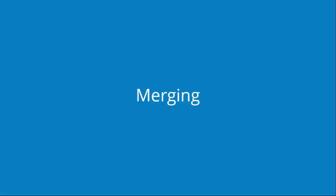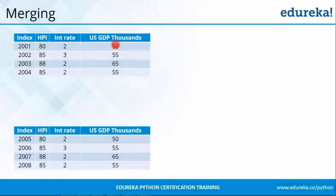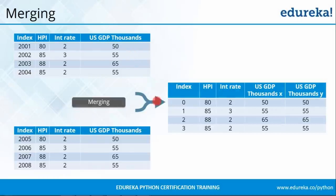After slicing, let's look at merging. We have two DataFrames: one with index values from 2001 to 2004, and another with index values from 2005 to 2008. When we merge both of these DataFrames, they form a single DataFrame. We can specify which columns to keep as common. Here the common columns are HPI, interest rate, and index. When it comes to GDP, we have two US GDPs — one labeled X and another labeled Y. This is how you can perform merging and control which columns appear in the final merged DataFrame.